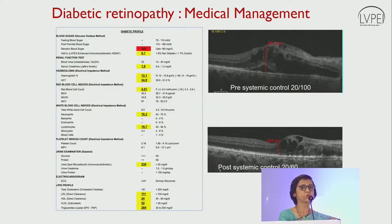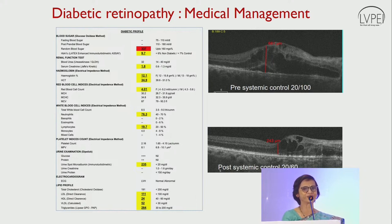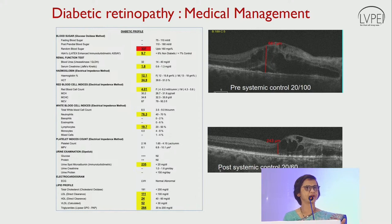My usual practice is that whenever a patient comes with diabetic macular edema, the first thing we do is the diabetic profile. You can see this patient's HbA1c — sometimes it can be as high as 18 or 17. This patient has a very unstable diabetic profile along with nephropathy. You can see the macular edema pre-systemic control with vision of 20/100.